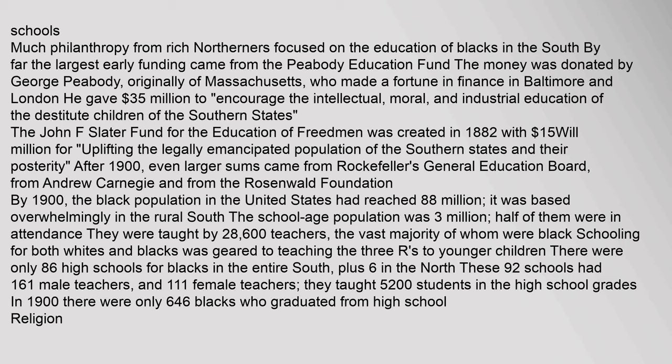By 1900 the black population in the United States had reached 8.8 million, based overwhelmingly in the rural South. The school-age population was 3 million; half of them were in attendance, taught by 28,600 teachers, the vast majority of whom were black. There were only 86 high schools for blacks in the entire South, plus 6 in the North. These 92 schools had 161 male teachers and 111 female teachers, teaching 5,200 students in the high school grades. In 1900 there were only 646 blacks who graduated from high school.